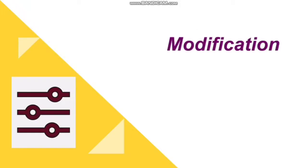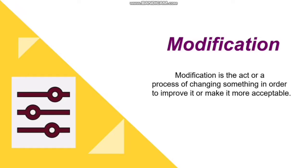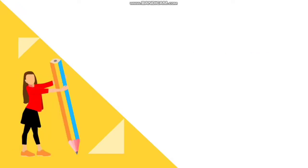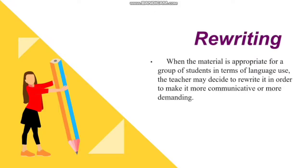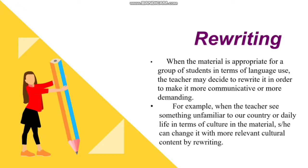Another adaptation technique is modification. Modification is a very general term referring to any kind of change — it is the act or process of changing something to improve it or make it more acceptable. Modification is divided into two parts. The first is rewriting: when material is appropriate in terms of language but the teacher wants to make it more communicative, they may rewrite it. For example, unfamiliar cultural content can be replaced with more relevant material, relating activities more closely to learners' backgrounds and interests and introducing authentic language models.